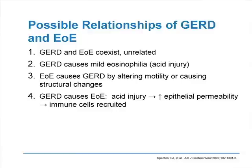There are four possible relationships between GERD and EOE. First, GERD and EOE may coexist and be unrelated. Second, GERD could cause mild eosinophilia — we know that biopsying patients with GERD will find some eosinophil infiltration, at least in the distal esophagus. Third, EOE may cause GERD by altering motility and favoring entry of acid into the esophagus. Finally, it's possible that GERD causes EOE by injuring the mucosa, leading to epithelial permeability and recruitment of immune cells.